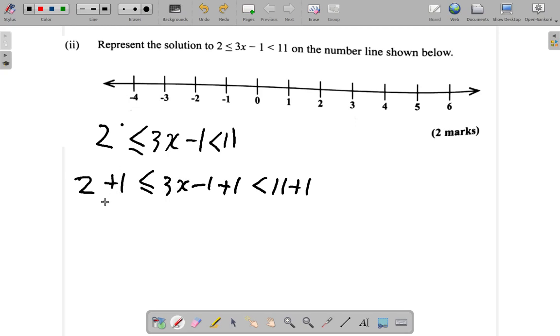Now, 2 plus 1 is 3, so this is 3. It's less than or equal to 3x. You'll see that negative 1 plus 1 is 0, so this is gone. Less than 11 plus 1, 12.